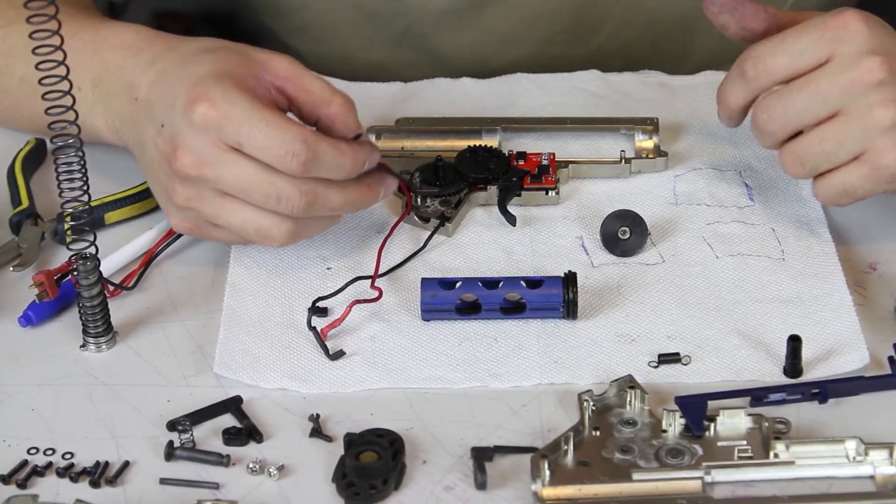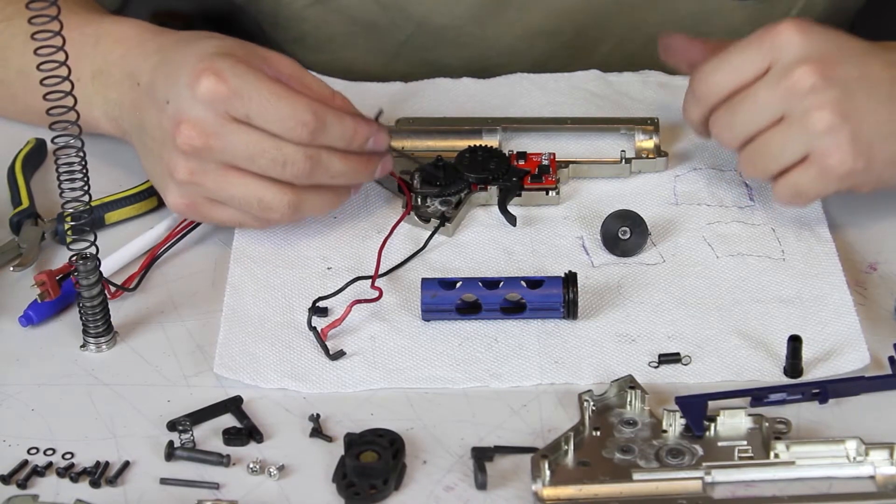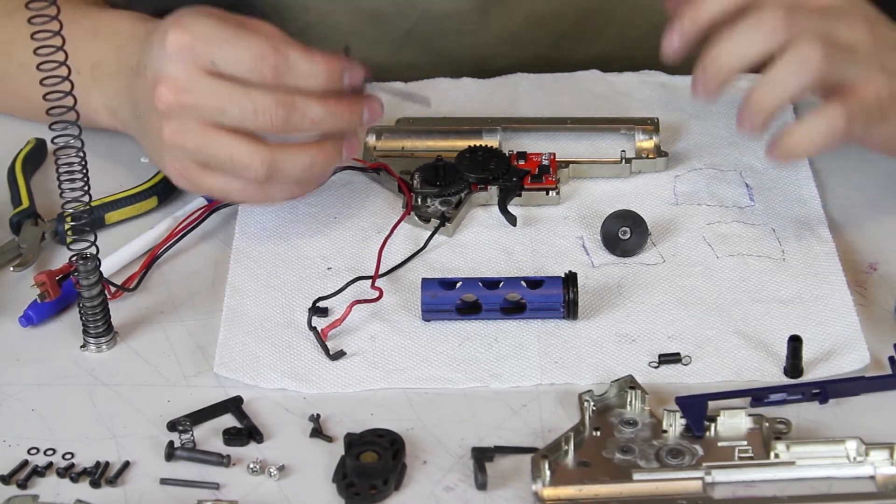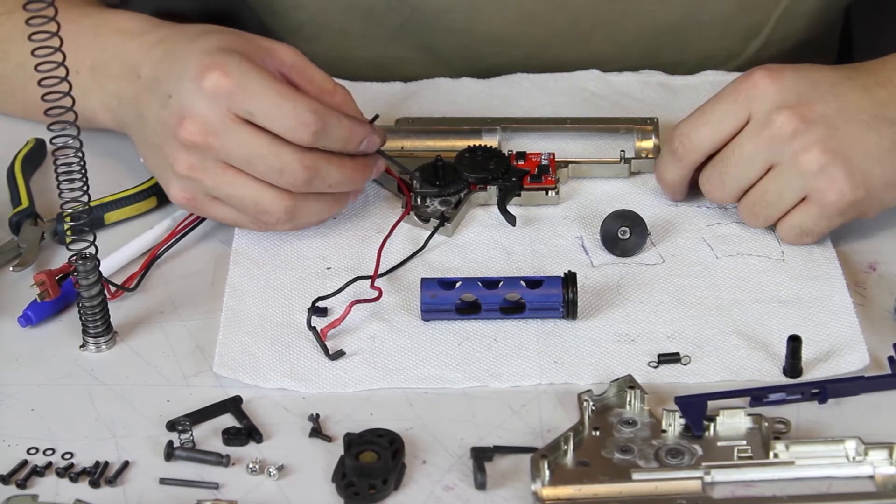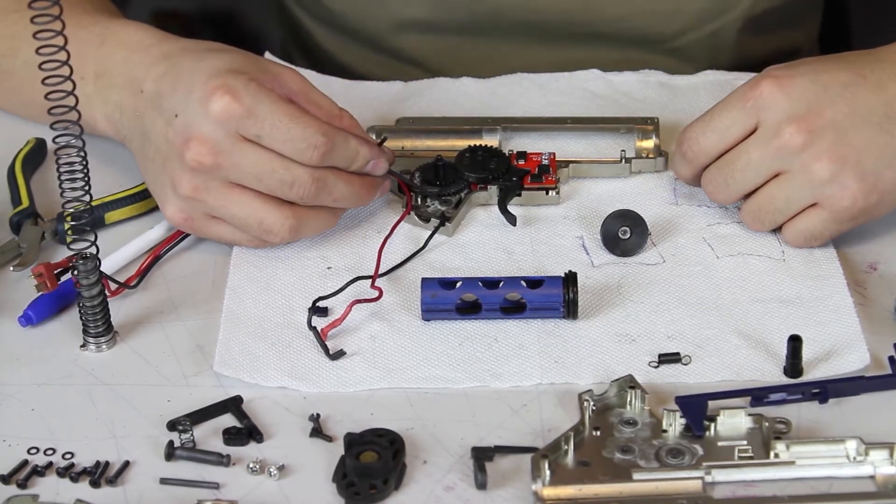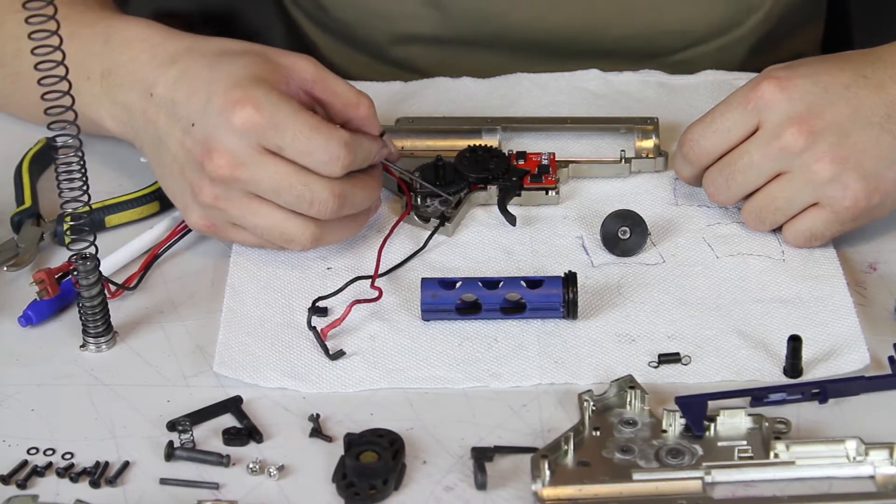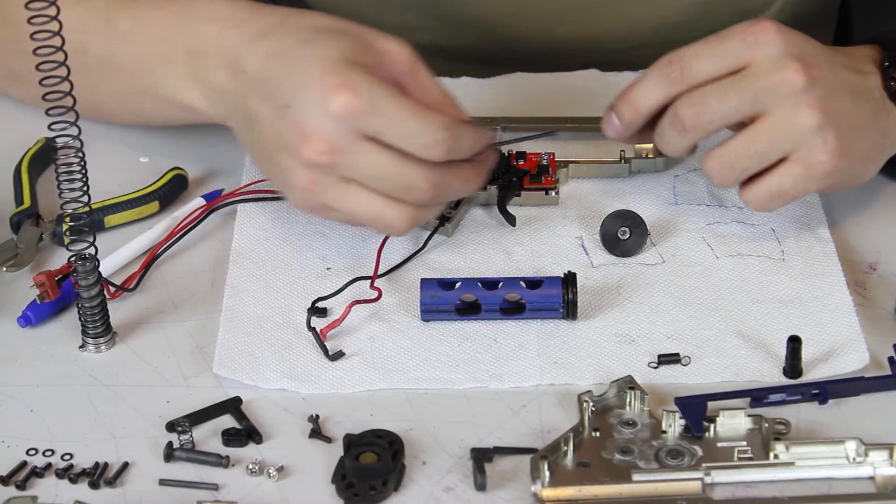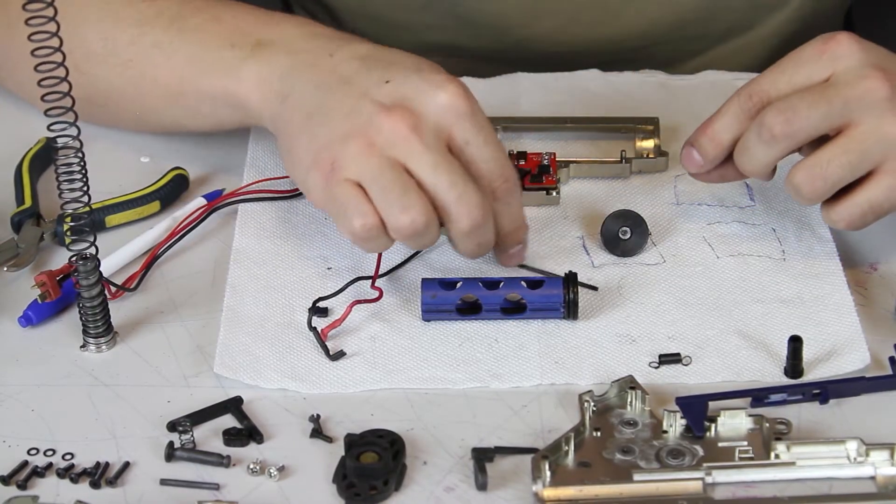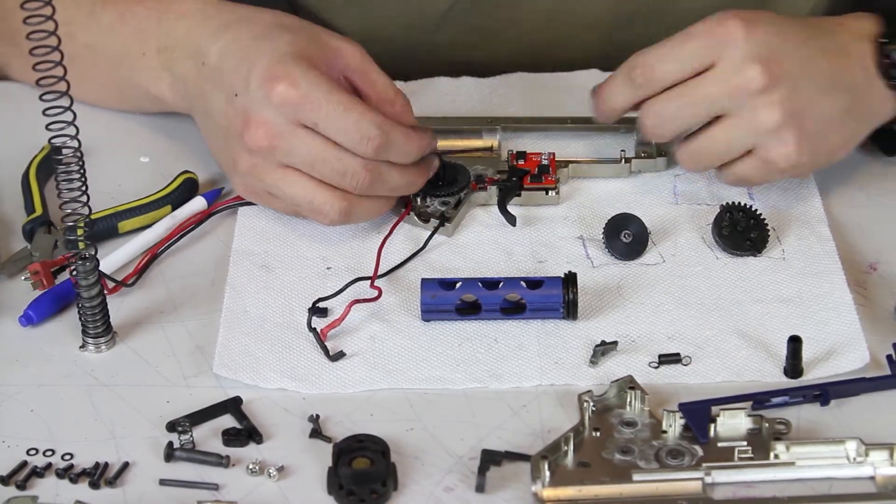Now, for the lower half of the gearbox. For this part, Jason likes to draw three squares onto his paper towel and place each gear into a square. The most important part of removing the gears is to ensure that all the shims that belong to each gear follow them exactly. If your gearbox is already well shimmed, you need to make sure that the shims go back in the exact same order they came out in. Otherwise, you may need to reshim it.